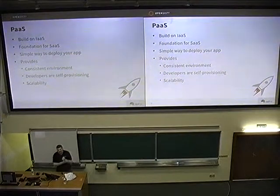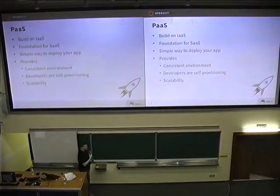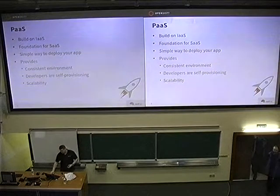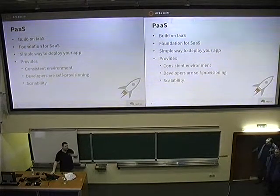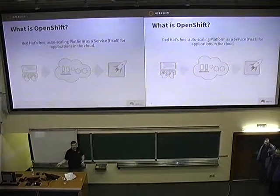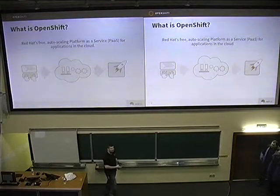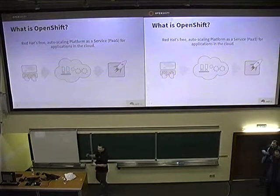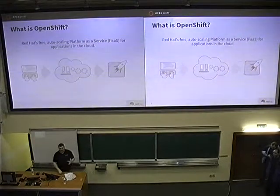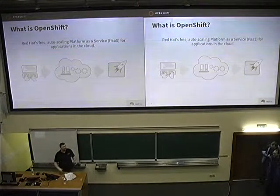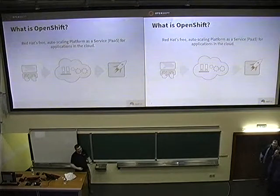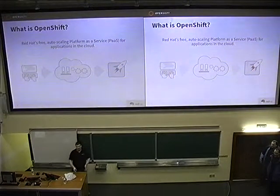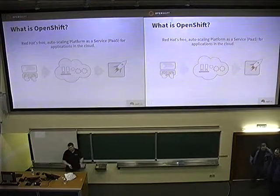I want to deploy an application and I want it to be simple. I am a developer, I want to deploy something, and I don't want to care about all the configurations or services. I want something like a black box: I take my code, push it there, and I get a running application. That's the whole point. This black box is the platform as a service — this black box is OpenShift. In OpenShift's case, it's open source, Apache 2, but the developer doesn't have to care what's inside if he doesn't want to.